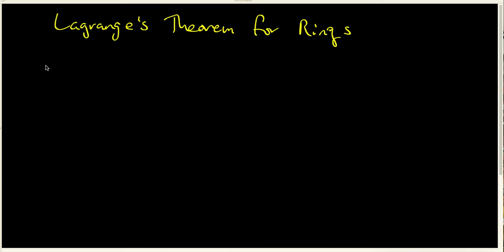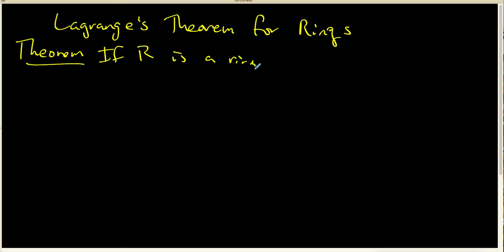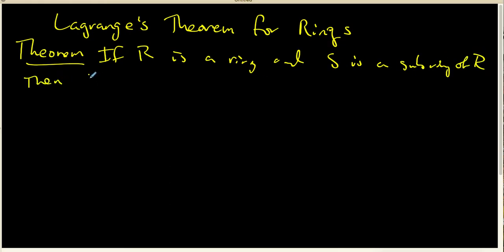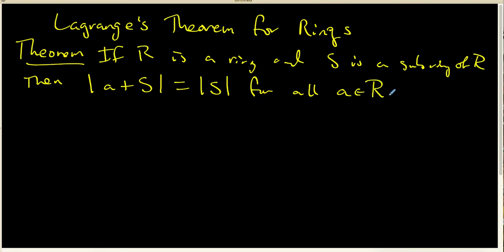In the last video, we proved the following theorem. We showed that if R is a ring and S is a subring of R, then the cardinality of the left coset A plus S is the same as the cardinality of the subring S for all elements of the ring R. In this video, we're going to investigate the consequences of this theorem, and we're going to wind up with an important result called Lagrange's theorem.